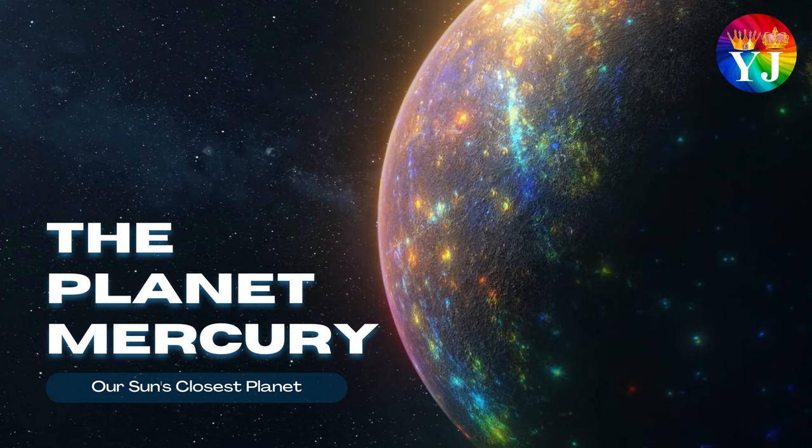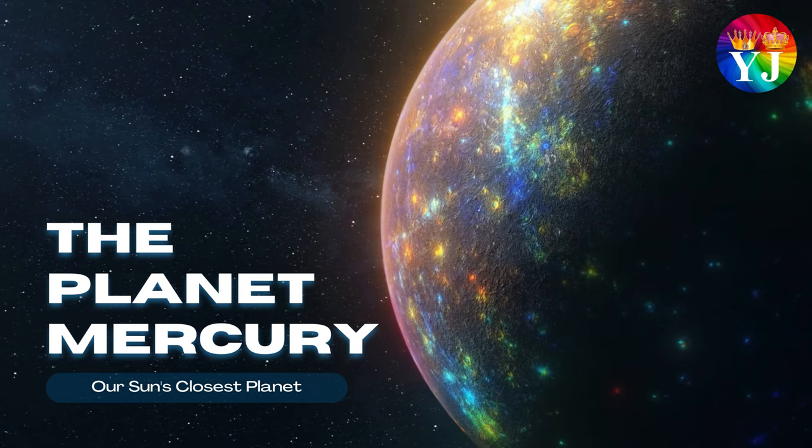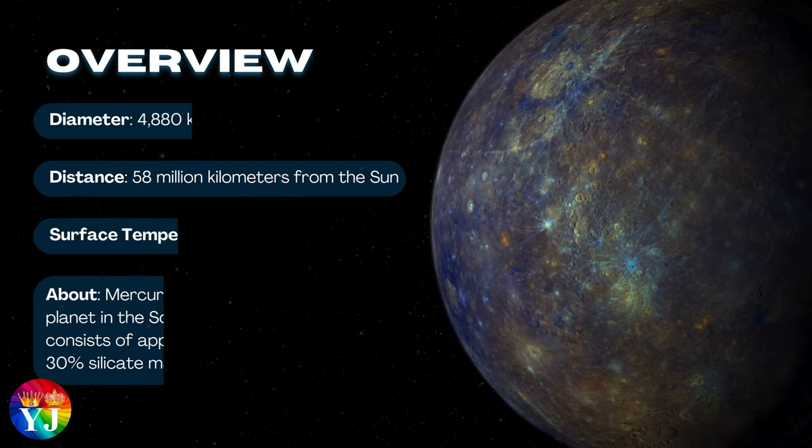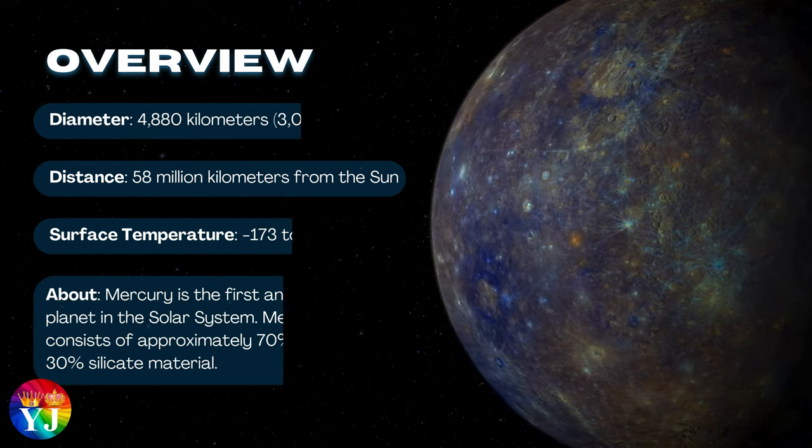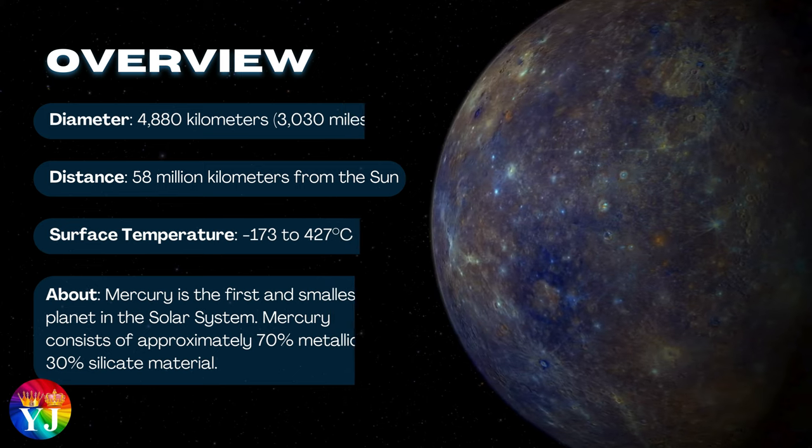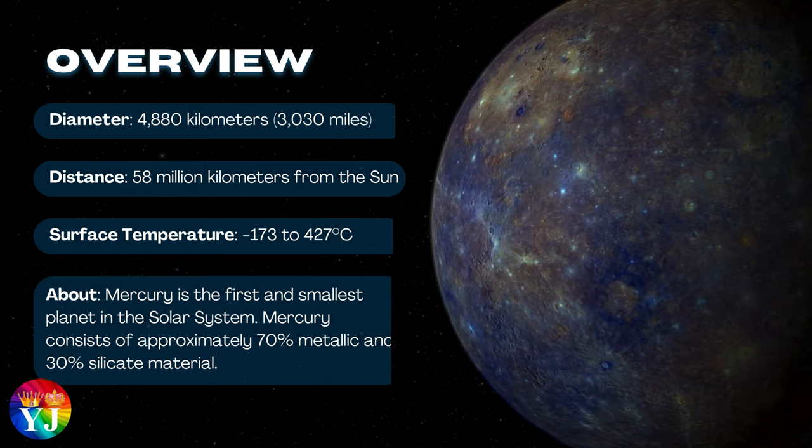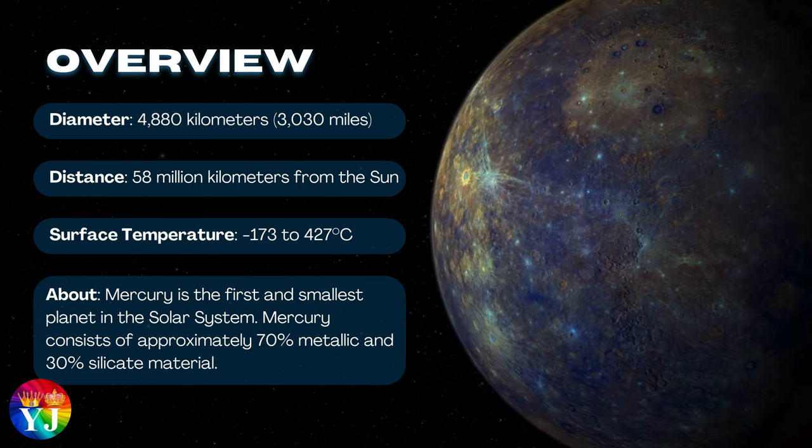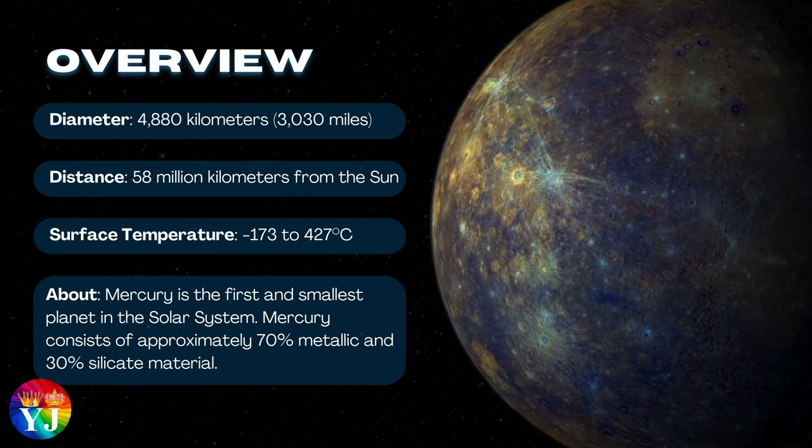The planet Mercury, our Sun's closest planet. Overview of Mercury: Diameter 4,880 kilometers, Distance 58 million kilometers from the Sun, Surface temperature minus 173 to 427 degrees Celsius.